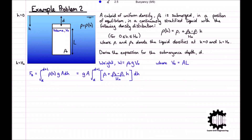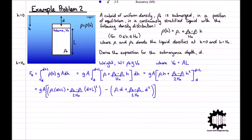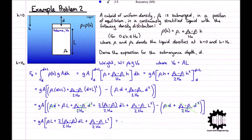Carrying out the integral and evaluating at the boundary limits d and d plus l gives g A times [rho_1 times (d plus l) plus (rho_2 minus rho_1)/(2 h_0) times (d plus l) squared minus rho_1 d minus (rho_2 minus rho_1)/(2 h_0) times d squared]. Expanding and simplifying results in g A times [rho_1 l plus (rho_2 minus rho_1)/(2 h_0) times (l squared plus 2 d l)].